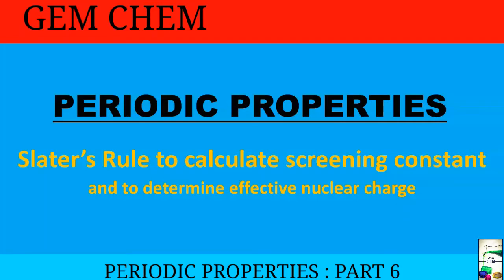Hi everyone, welcome to GemChem. This is Periodic Properties Part 6, where we will deal with Slater's rule to calculate the screening constant of different orbitals and to determine the effective nuclear charge. If you have not watched the previous videos on Periodic Properties, you can watch them — I will give the link in the description box as well as the i-button above this video.